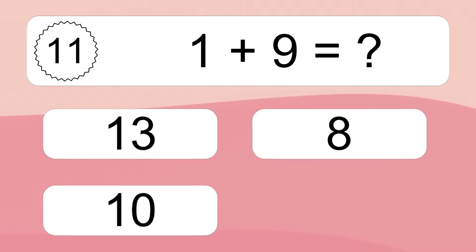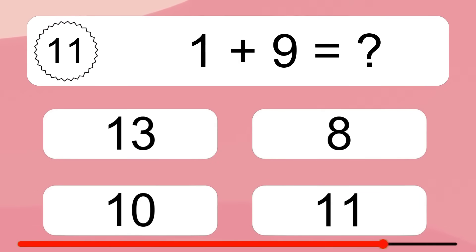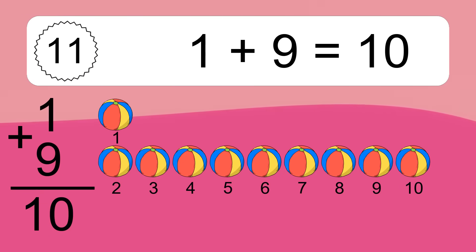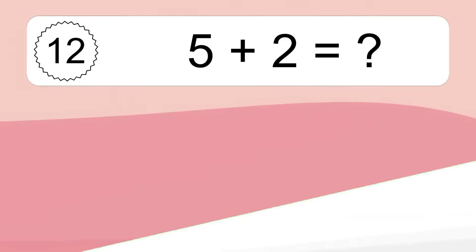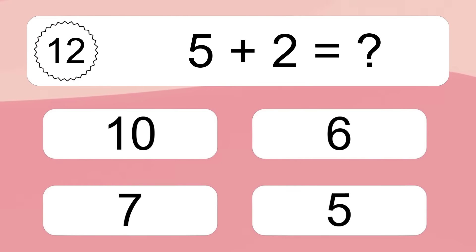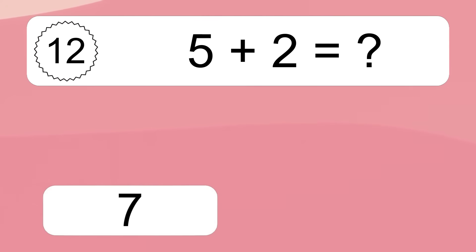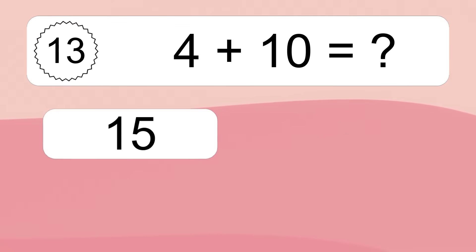1 plus 9 equals what? 1 plus 9 equals 10. Let's count it: 1, 2, 3, 4, 5, 6, 7.